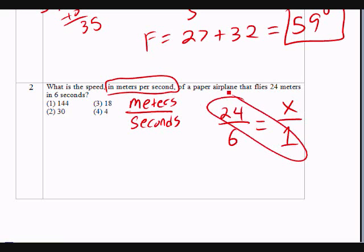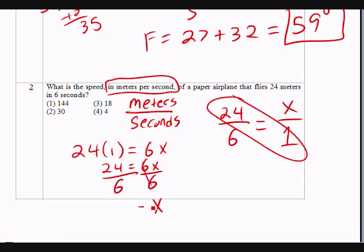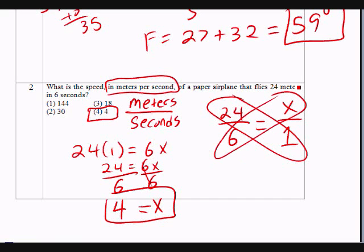This is 24 meters over 6 seconds. You know, how many meters would it be in 1 second? So you're going to cross-multiply this. 24 times 1, which is 24. 6 times x is 6x. So 24 equals 6x divided by 6 on both sides. And you will get x equals 4. And that will be choice 4. I mean, there's different ways of doing it, but the answer is going to be 4.